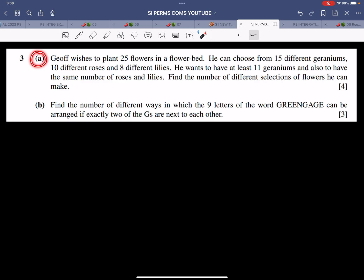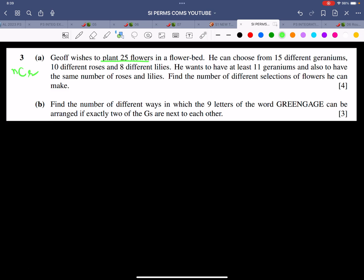The question says Part A: Geoff wishes to plant 25 flowers in a flower bed. He can choose from 15 different geraniums, 10 different roses, and 8 different lilies. He wants to have at least 11 geraniums and also to have the same number of roses and lilies. Find the number of different selections of flowers he can make. First of all, this part is about combination. Let me underline a few things.